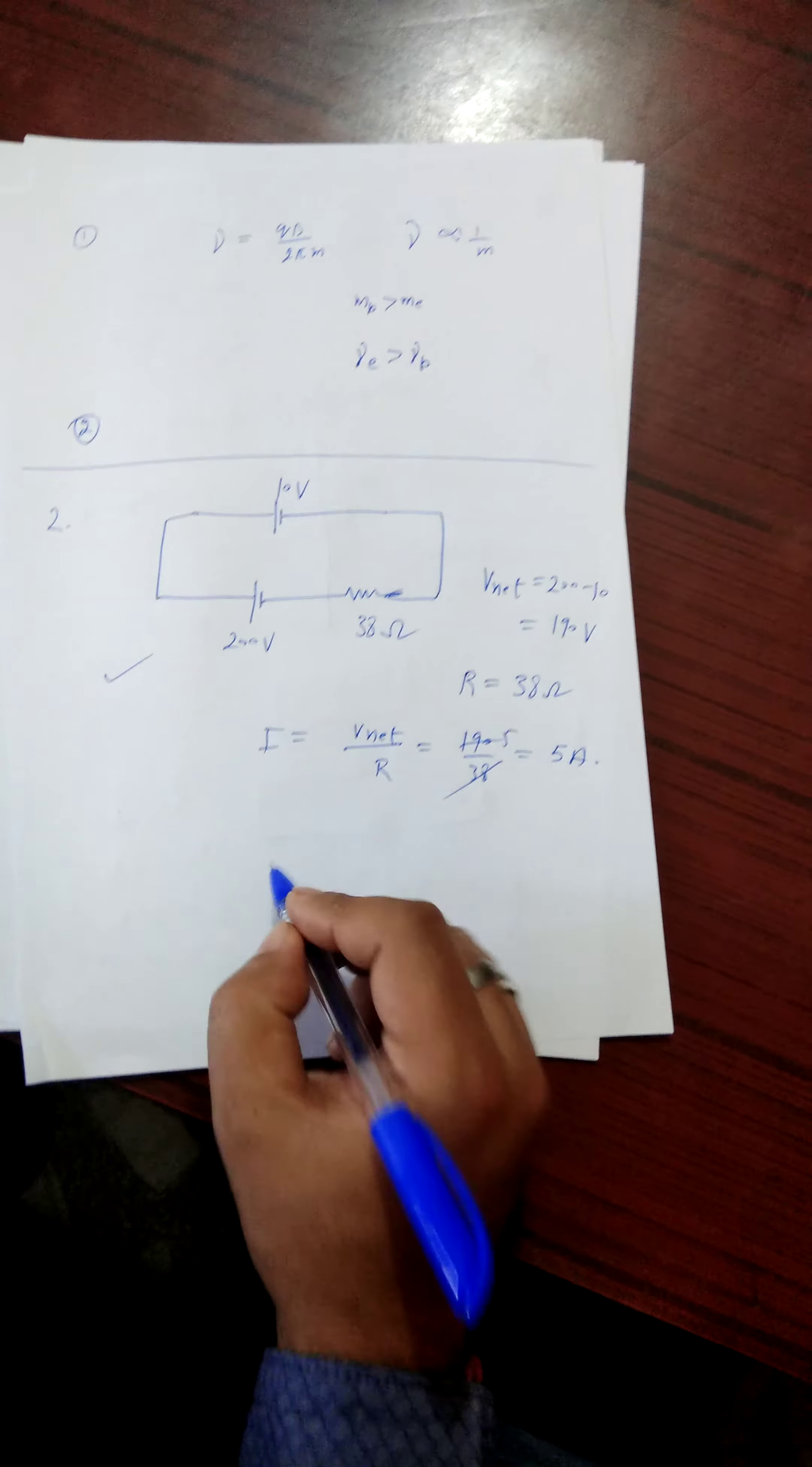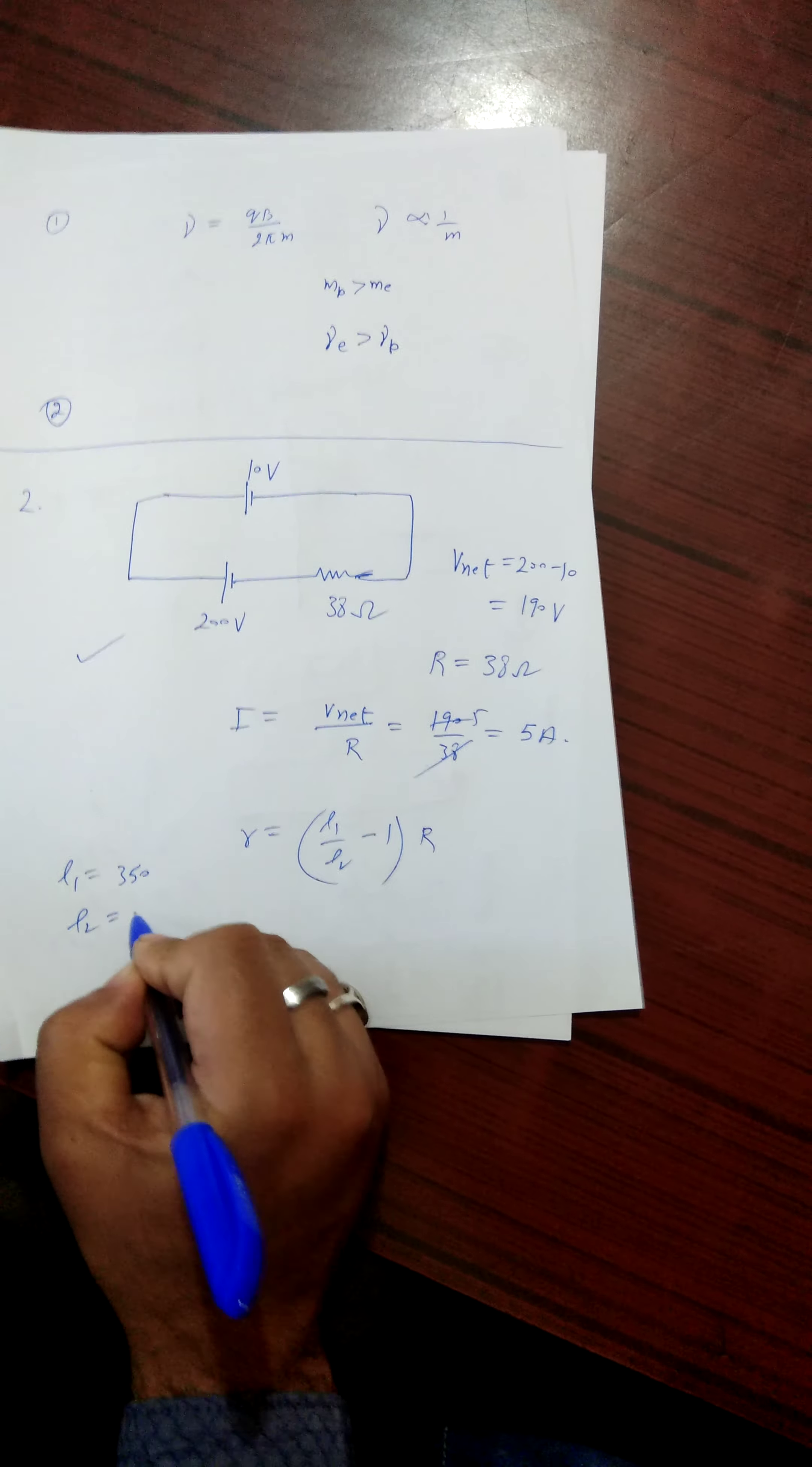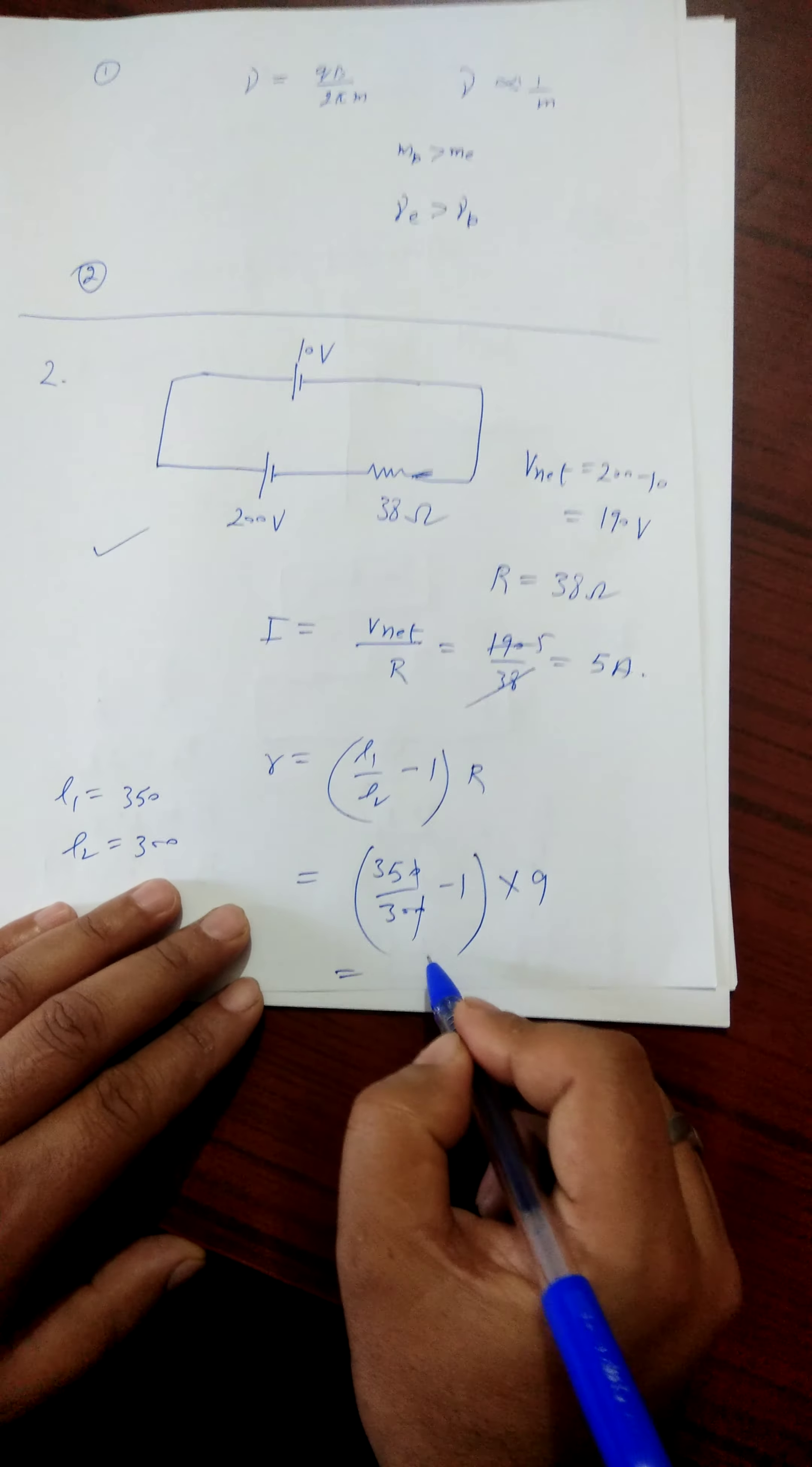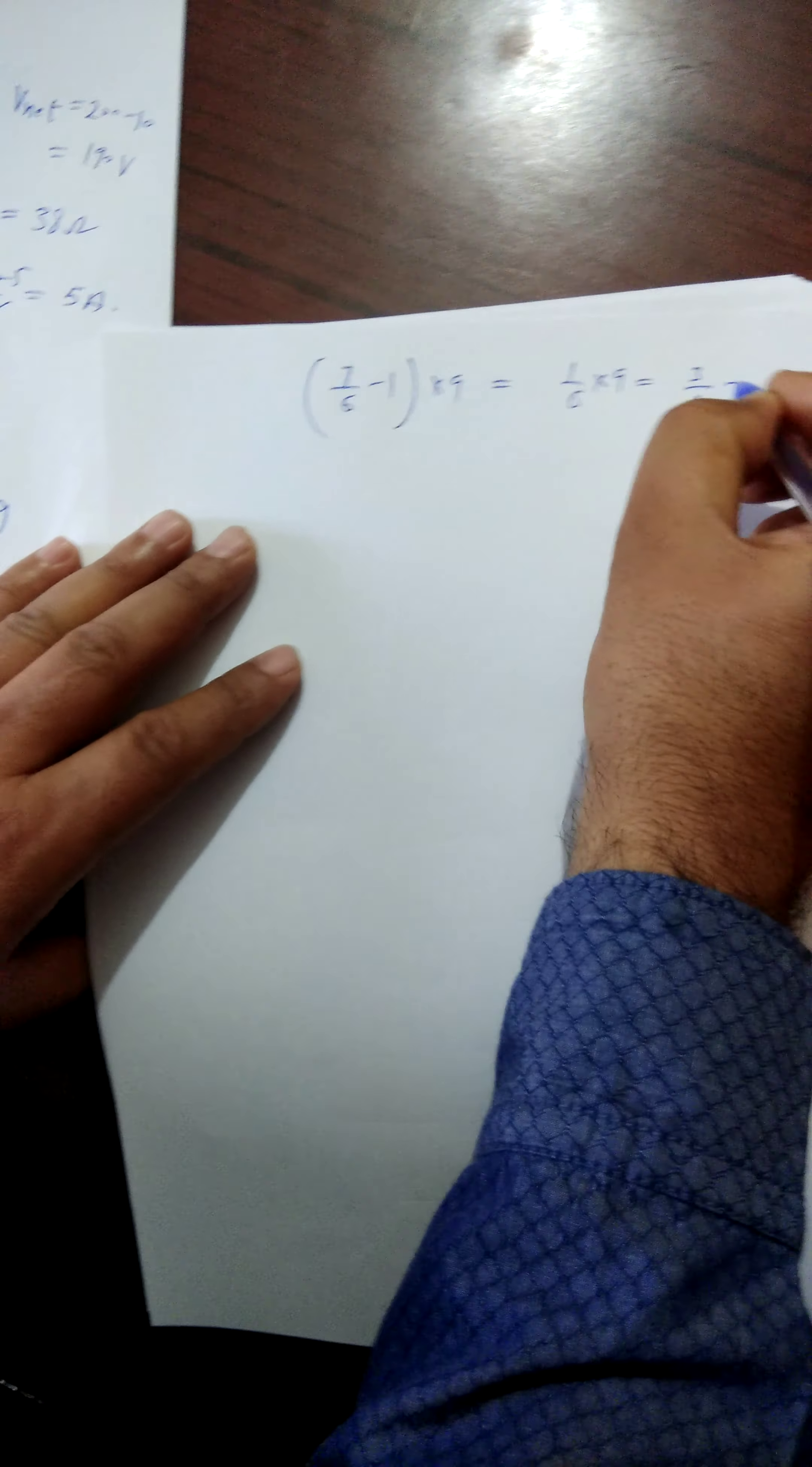This is simple. As we know R is equal to internal resistance of the cell is given by, where L1 and L2 are the two balancing length. In first case, in the open circuit, L1 is 350, L2 is 300. That's why it becomes 350 over 300 minus one, and resistance 9 ohm is connected. We can write that, and this is 1.5 Ohm.